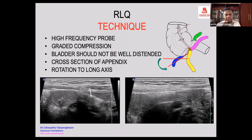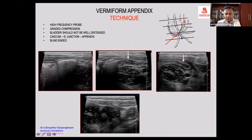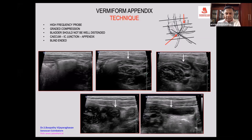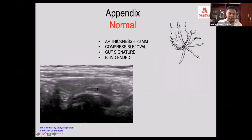With graded compression, in many patients you will pick up the cross-section of either the normal or the abnormal appendix. You can then rotate to see that the appendix is below the cecum. You will see the cross-section of the appendix, and once identified, rotate the transducer to look for the gut signature, because the appendix is also a part of the bowel.